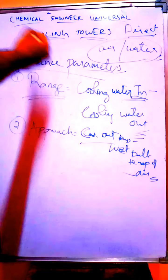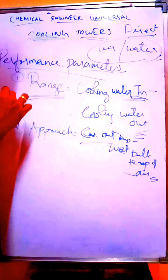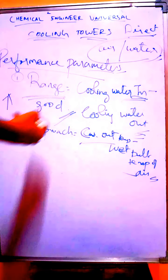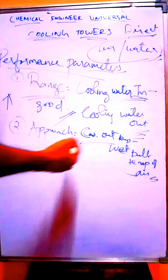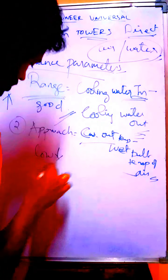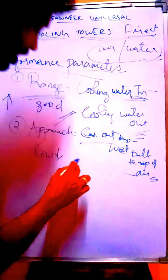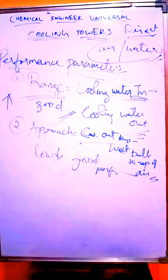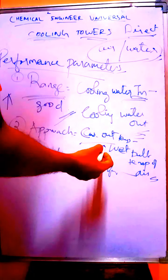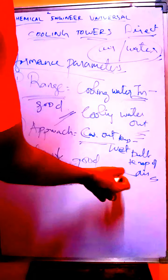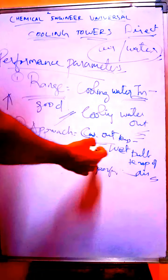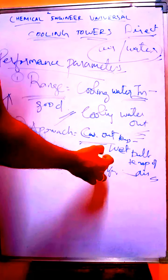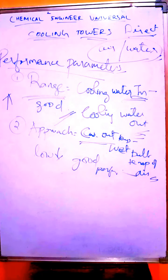When we are talking about performance: the higher the range, the better the performance — we are removing more heat. The lower the approach, the better the performance. It is inverse between range and approach. It means the cooling tower is trying to reach the wet bulb temperature — that means atmospheric temperature. It is trying to reduce the temperature as much as possible, so the smaller that difference, the better the performance.